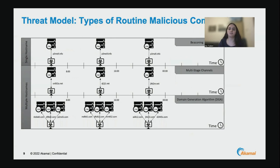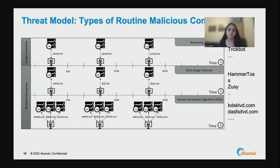There are three different types of malicious routine communication. The first is beaconing, where a device tries to access a single domain in a routine way. The second type is multi-stage channels, where different hostnames are used at each stage of the routine communication. And lastly, there is DGA — domain generation algorithm. All three of these techniques are seen in the wild in recent attacks, whether the communication is made to a malicious or legitimate hostname. For example, Emotet and TrickBot, known malwares, often use beaconing in their malicious operations. For multi-stage channels, there is Amartas and also ZUSI, a popular malware, and many more.